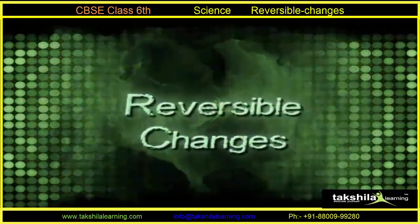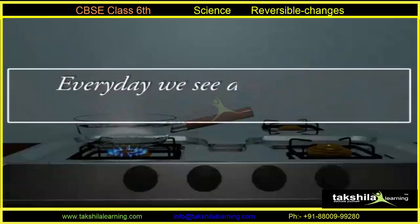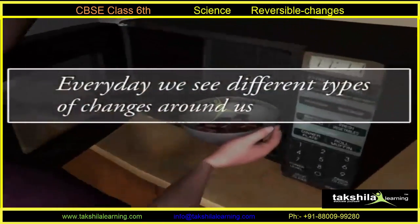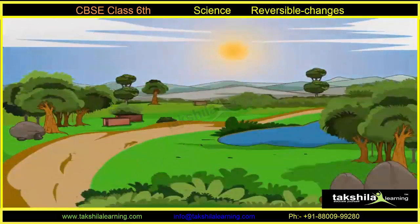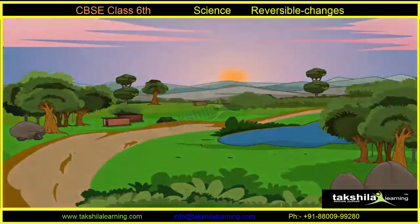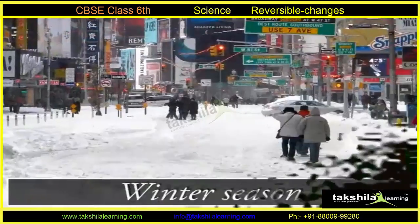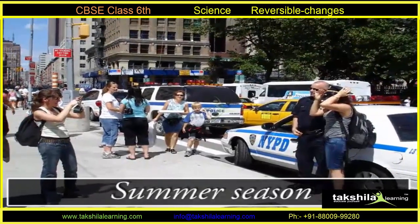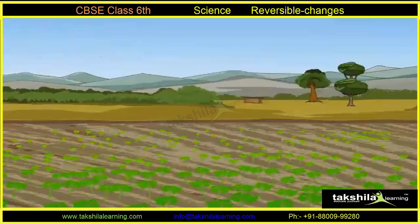Every day we see different types of changes around us. We can observe that day gradually changes into night. The seasons change from winter to summer, and in the fields, the size of crops changes with time.